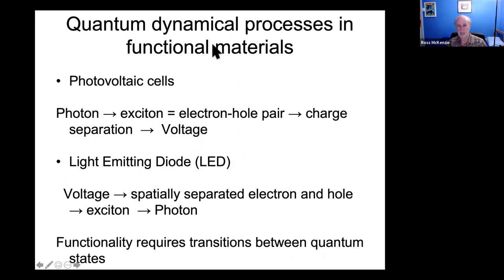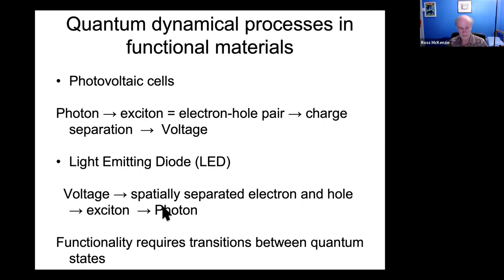Other examples of quantum dynamical processes in functional materials: a photovoltaic cell takes a photon, produces an exciton viewable as an electron-hole pair, and that decays into a separated electron and hole, producing a voltage. A light-emitting diode is the reverse process: a voltage produces a spatially separated electron and hole, which combine to produce an exciton, which then decays radiatively to produce a photon. This kind of functionality requires transitions between different quantum states, so we need to describe those transitions — quantum dynamics is involved.